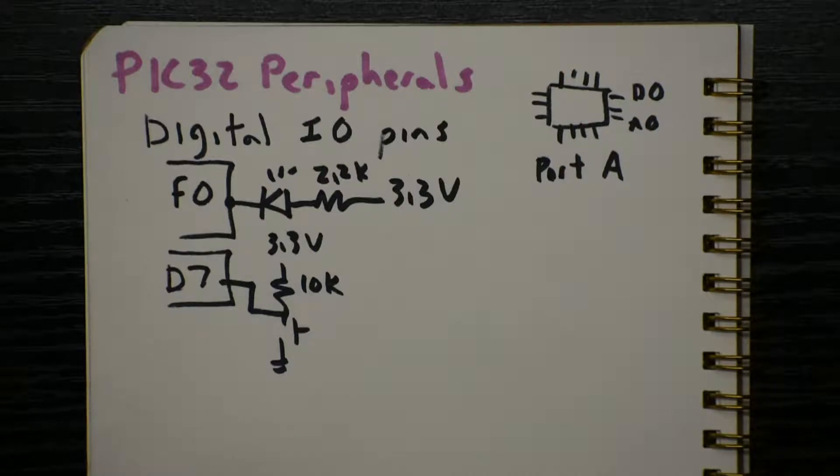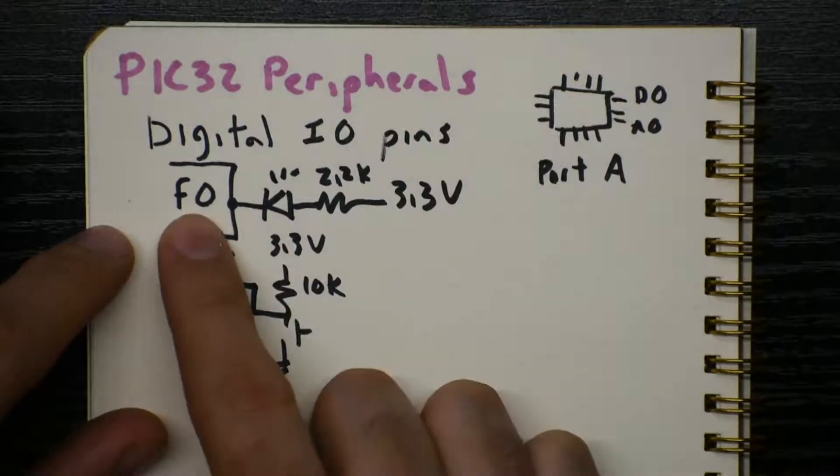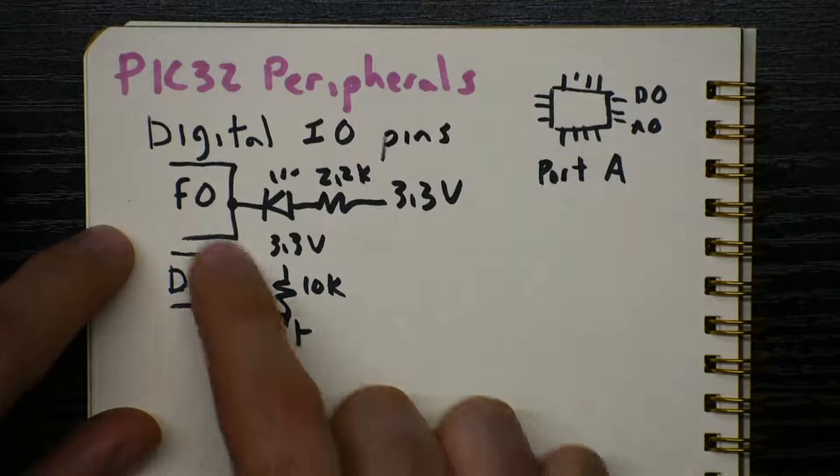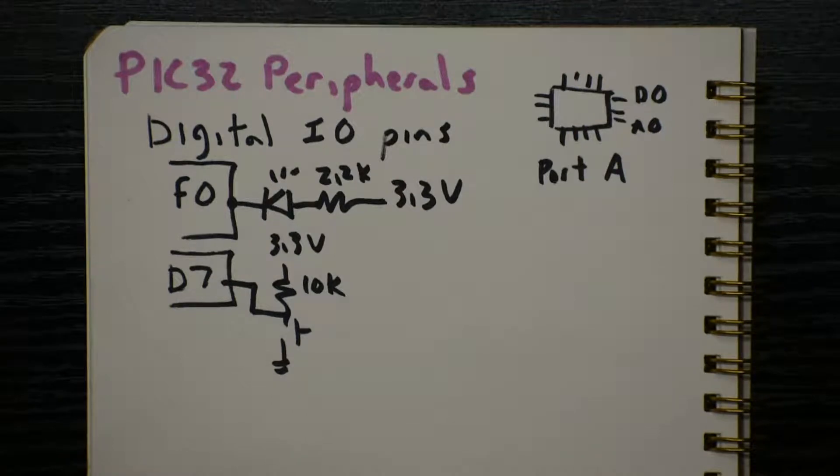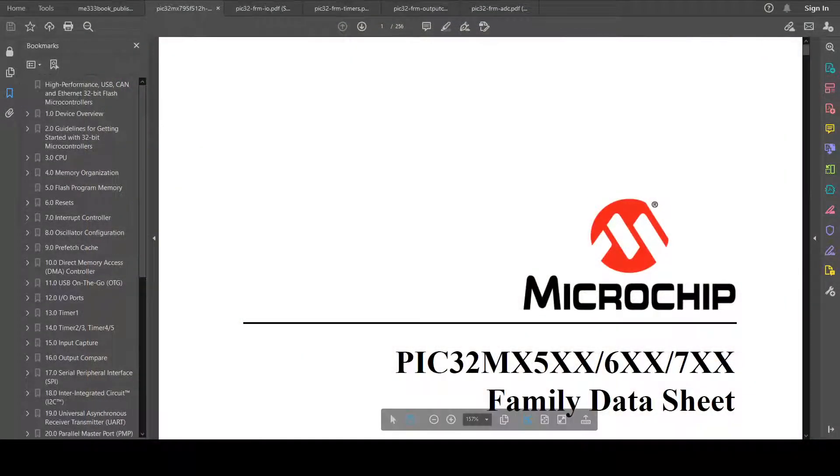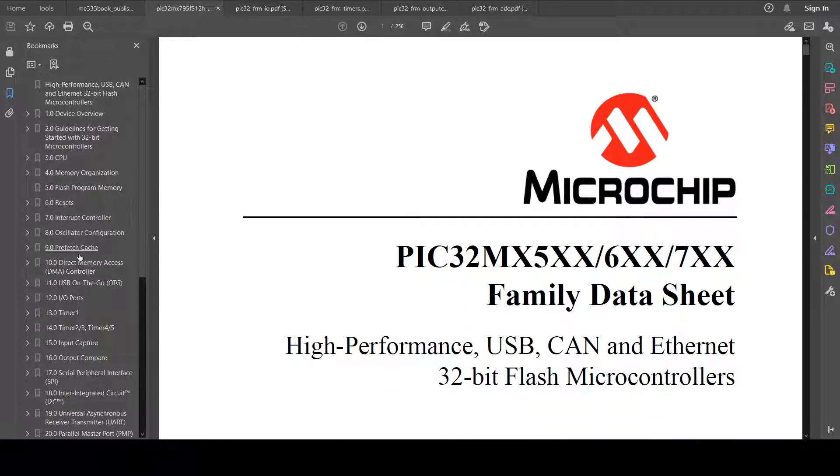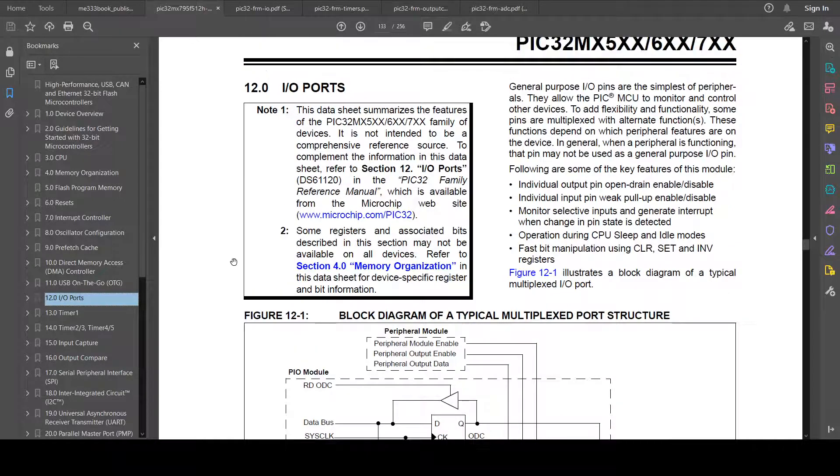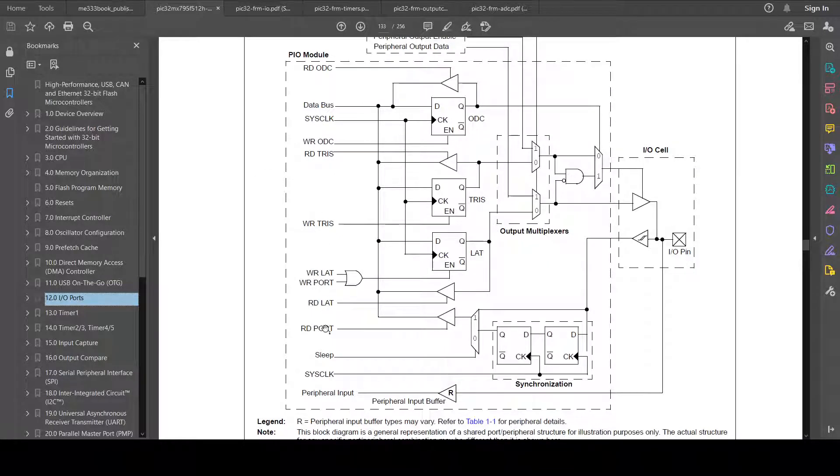So basically, you can just make these pins inputs or outputs. If they're outputs, you can control if they're high or low. If they're inputs, you can read whether they're high or low. So how do we look at a new peripheral that we haven't learned about yet and figure out exactly what special function registers control how this pin works? And what are those special function registers and what values should we put inside of their bits? To do that, we need to look at the documentation provided by Microchip.